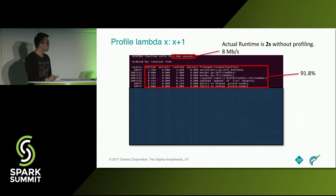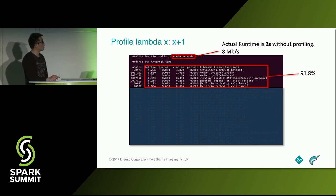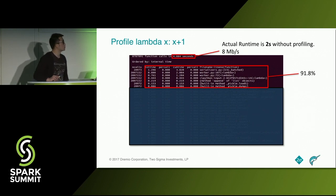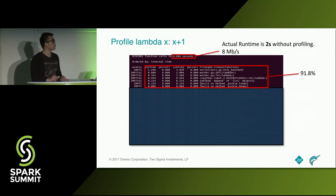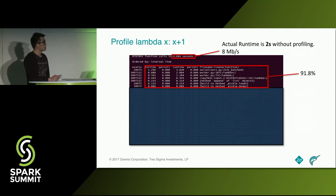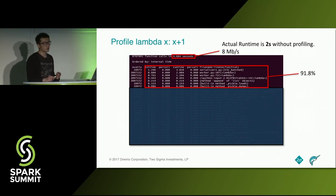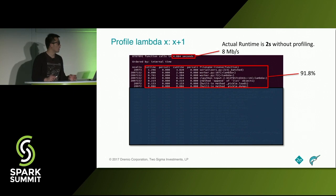Looking at a profile taken during one UDF evaluation, it took about two seconds to compute about two million doubles for X plus one — about eight megabytes per second in processing this simple computation, which isn't very fast. The profile shows four seconds because the Python profiler adds significant overhead. Over 90% of the total runtime is spent in serialization and the lambda function overhead. We want to improve this.